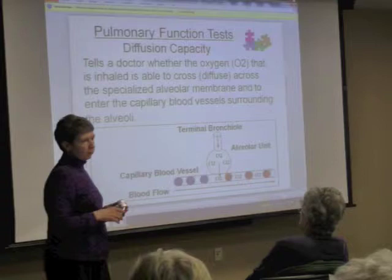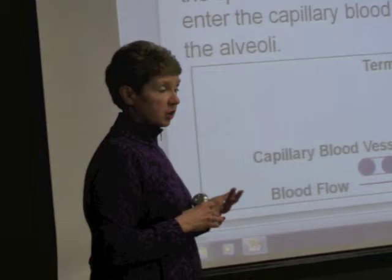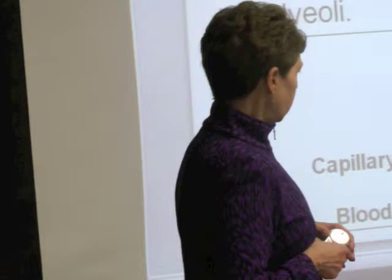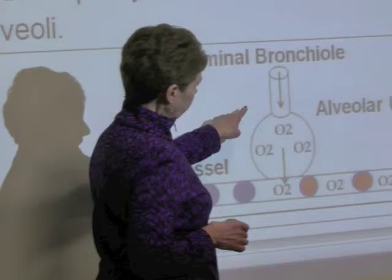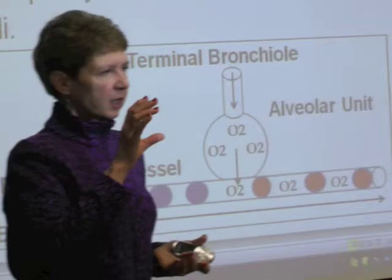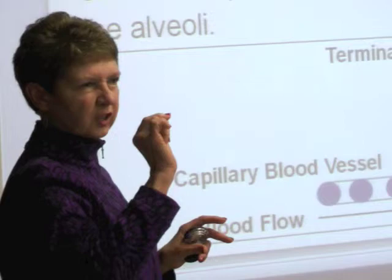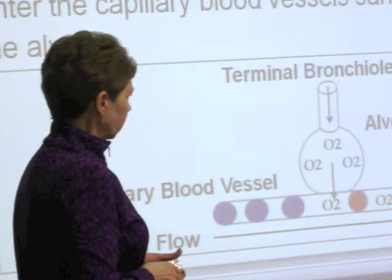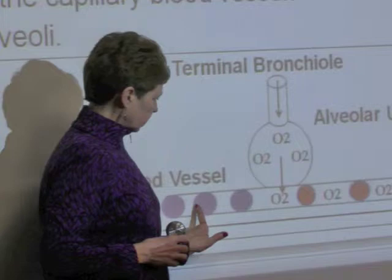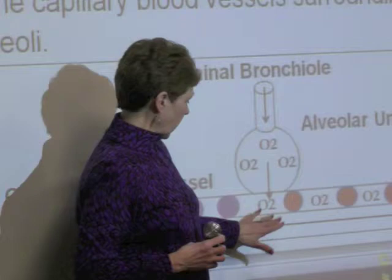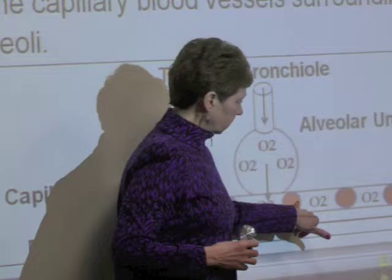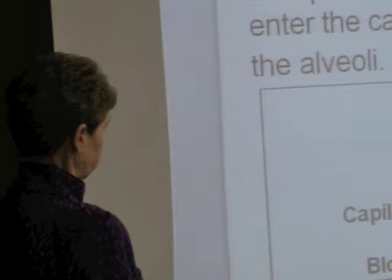In a number of lung diseases, that membrane becomes damaged — particularly in emphysema and especially in pulmonary fibrosis. Oxygen crosses that little membrane, which is kind of like the thin skin you find when peeling an onion. Oxygen comes in, crosses into your blood, and is picked up by hemoglobin molecules in your bloodstream. These hemoglobin molecules are unoxygenated, they pick up the oxygen, and then the blood flows through your body with plenty of oxygen. That process of oxygen moving into your bloodstream is called diffusion.